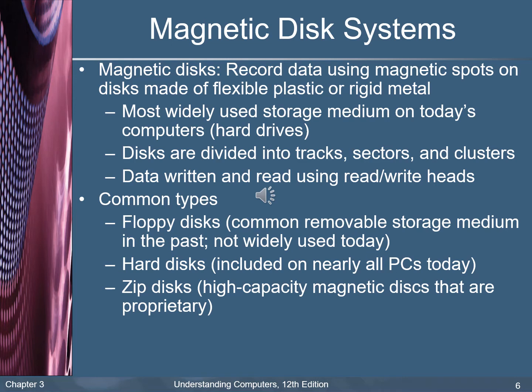For magnetic disks or magnetic media, data is recorded using magnetic spots on a disk made of flexible plastic or rigid metal. Most widely used storage medium on today's computers are hard drives. Disks are divided into tracks, sectors, and clusters. Data is written and read using read and write heads. Common types of magnetic disk include: floppy disk — a common removable storage medium in the past, not widely used today; hard disk — included on nearly all PCs today; and zip disk — high capacity magnetic disks.